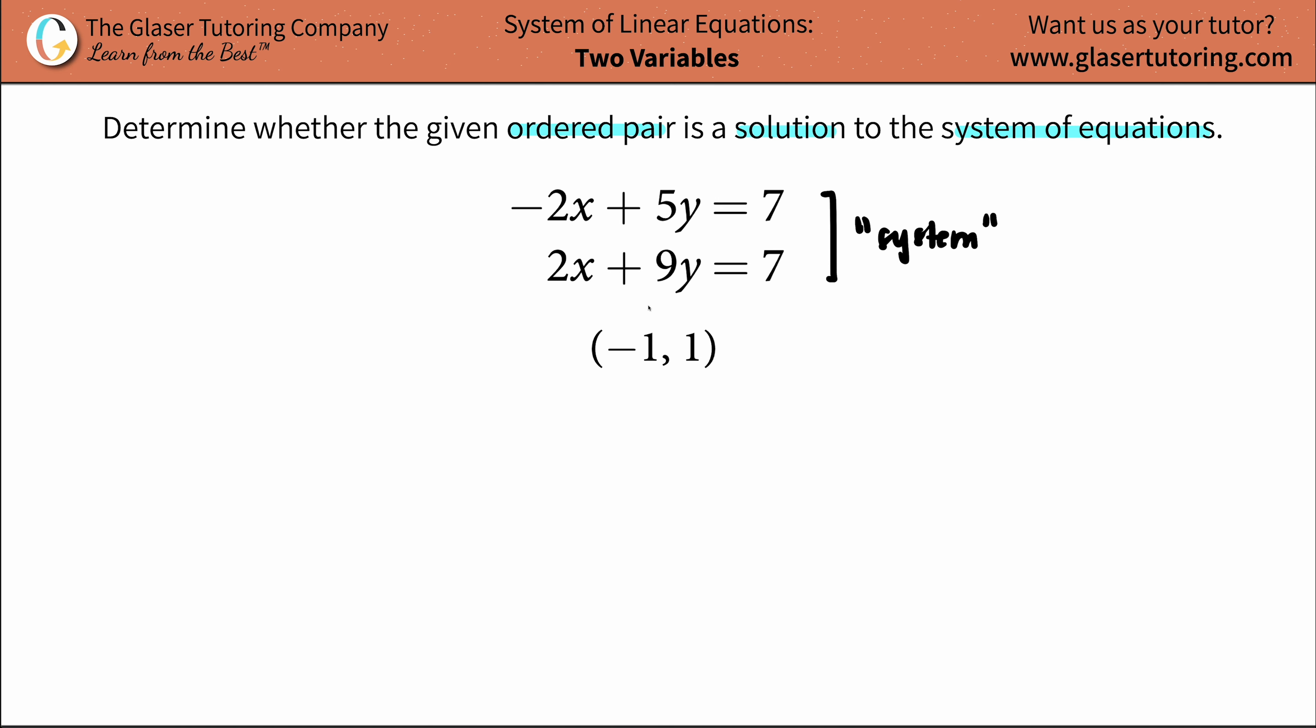Now, the ordered pair that is being discussed here is this. An ordered pair is basically just a point on a graph. We know that any point can be broken down into two letters. Usually, or always, the first letter is always your x-coordinate, and the back letter is always y. So it's always x, y. So that means that my x value is a negative 1, and my y value is a 1.